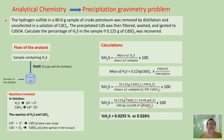Today we are going to solve an analysis problem in which both volatilization and precipitation techniques were applied. The hydrogen sulfide in an 80-gram sample of crude petroleum was removed by distillation and collected in a solution of cadmium chloride. The precipitated cadmium sulfide was then filtered and ignited to cadmium sulfate. Calculate the percentage of hydrogen sulfide in the sample if 0.125 grams of cadmium sulfate was recovered.